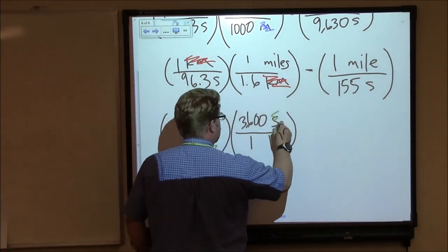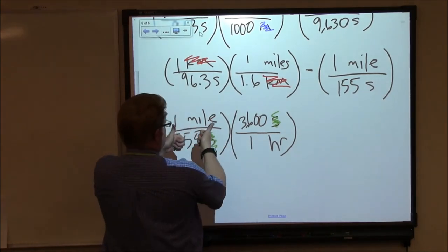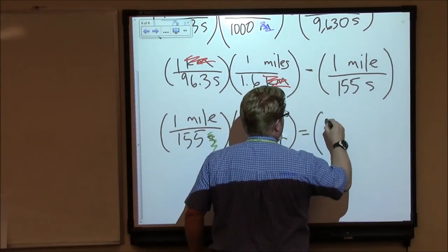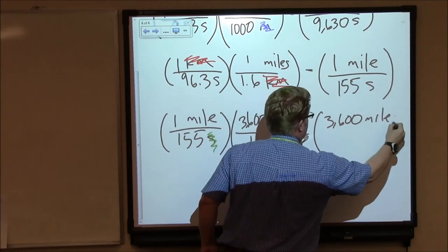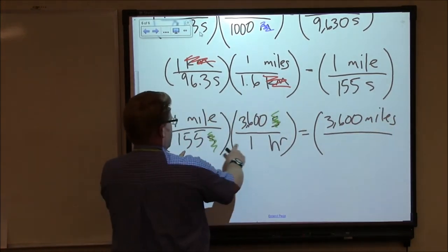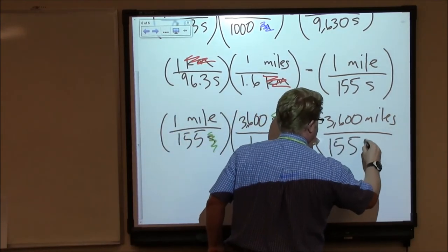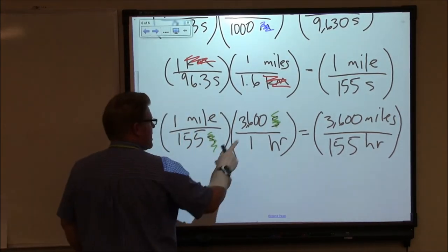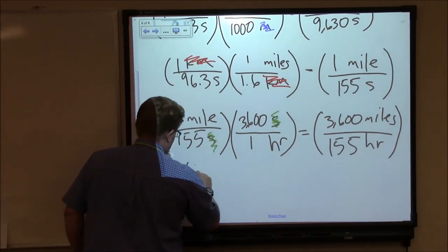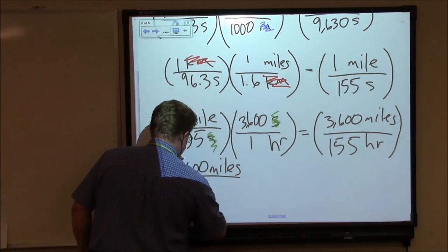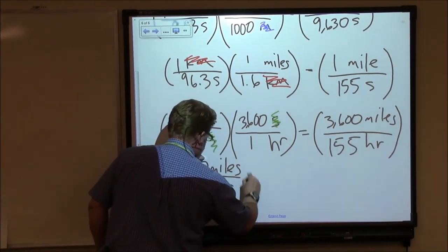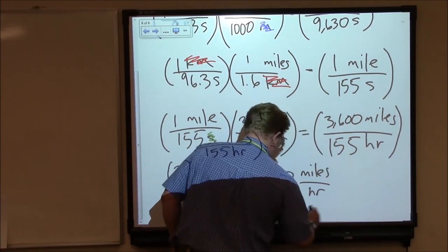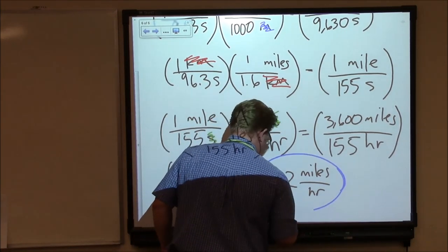This allows me to cancel my seconds. So my units, looks like my units are going to work out. Miles per hour, that's great. 1 times 3,600 equals 3,600 miles in 155 hours. But let's see if we can't pare this down a little bit. If we do subdivision, we find that 3,600 miles in 155 hours works out to 23.2 miles per hour.